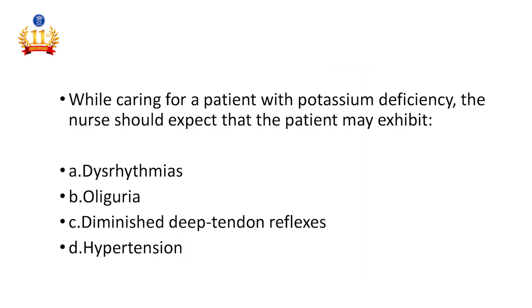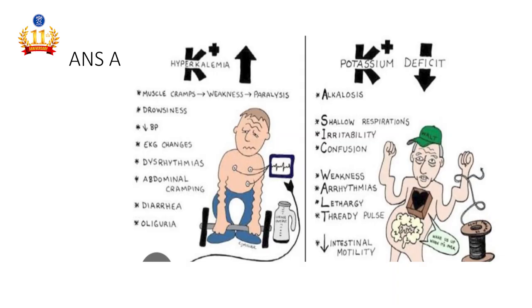Fifth question: While caring for a patient with potassium deficiency, the nurse should expect the patient may exhibit dysrhythmia, oliguria, diminished deep tendon reflexes, or hypertension. The answer is dysrhythmias. Potassium is a main electrolyte — if it increases or decreases, it can cause many lethal problems. The normal value of potassium is 3.5 to 5.5. Less than 3.5 is hypokalemia; more than 5.5 is hyperkalemia. Both conditions carry a risk of dysrhythmias.